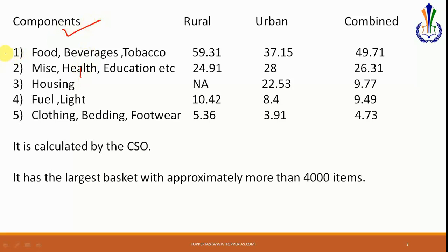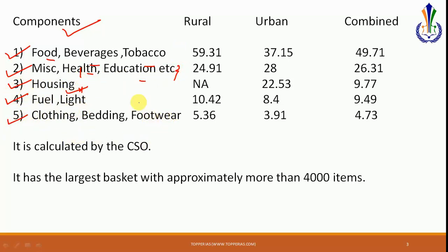Coming to the components, the first and highest weightage is given to food, beverages, and tobacco. Second is miscellaneous services including health and education — this is the service sector. Third, it includes housing, then fuel and light, and next clothing, bedding, and footwear.